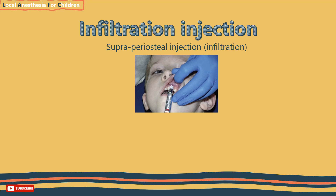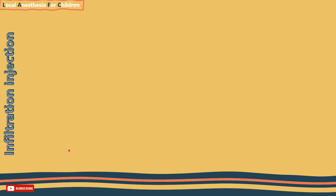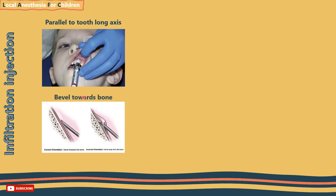Now let's discuss infiltration injection, also known as supraperiosteal injection. This is the most common technique for obtaining pulpal anaesthesia, achieved by flooding the small nerve endings with anaesthetic solution in front of each tooth. The patient is asked to partially open the mouth and the mucosa is held taut. The syringe is held parallel to the long axis of the tooth, and the needle bevel is directed towards the bone to avoid ballooning of soft tissue. Penetrate the mucosal membrane mesial to the primary molar to be anaesthetised, directing the needle between the roots of the tooth. Slowly inject a small amount of anaesthetic while advancing the needle to the desired position, injecting about half of the cartridge.